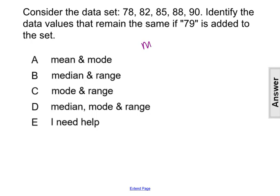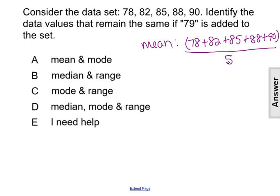First let's find the mean. The mean of just the original data points would be adding up and finding the sum of 78 plus 82 plus 85 plus 88 plus 90, and dividing by 5 since that's how many there were. That sum is 423 divided by 5, which gives us a mean of 84.6.